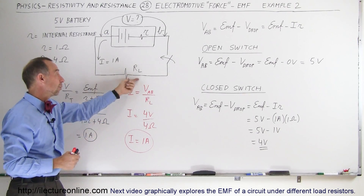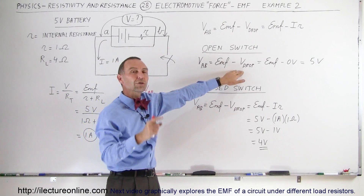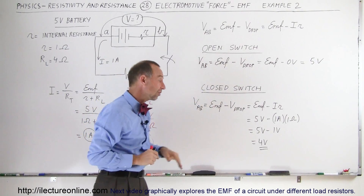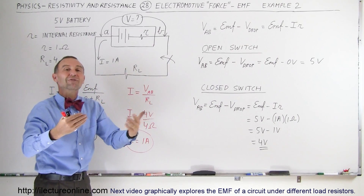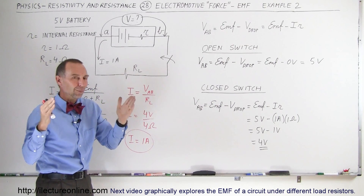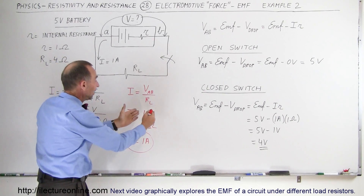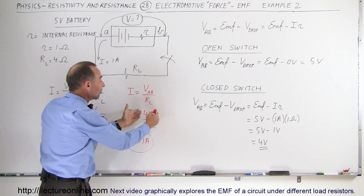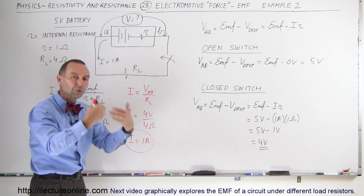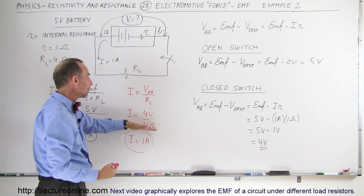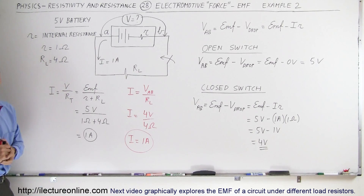Unless the load resistor is really large, there will always be some internal voltage drop. The battery doesn't seem to have the full 5 volts of the EMF — it is somewhat less: 5 volts minus the drop across internal resistance. It acts as a voltage source of EMF minus the internal voltage drop, and dividing that by the load resistor alone gives you the same current in the circuit. And that's how that works.